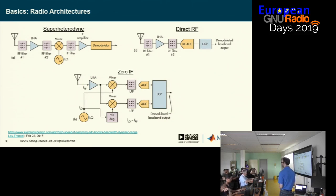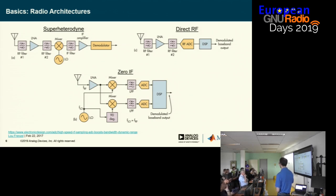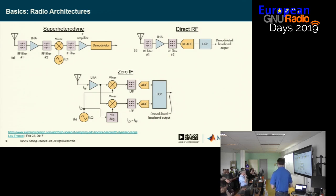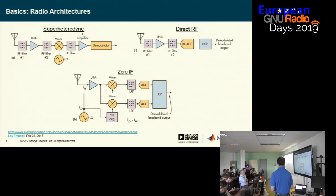We have a third style called zero-IF. Instead of having an IF stage, we directly mix down the RF signal to baseband where the converters feed it in. This is the most common style of transceiver that ADI provides — the AD9361, 71, and newest generation all use this zero-IF style. This hasn't really been possible until the last 10-15 years because of added complexity: you have to deal with images and DC problems common to this architecture, and there are many pieces inside the chips that compensate for these non-idealities.